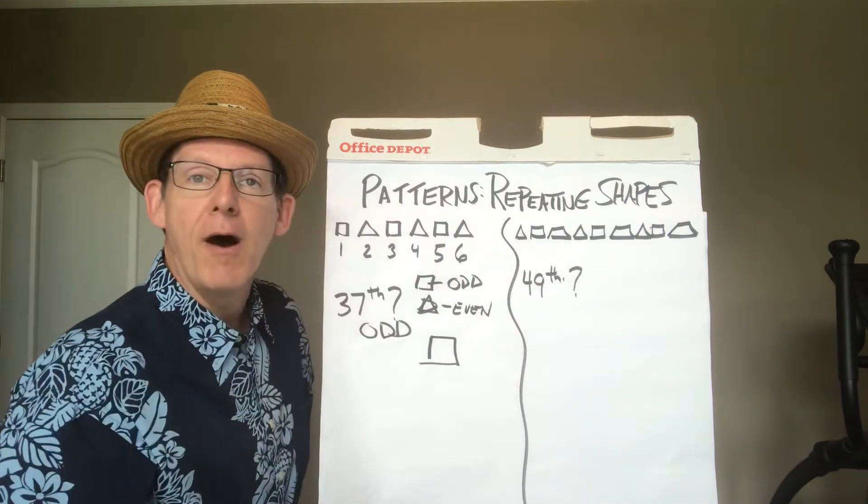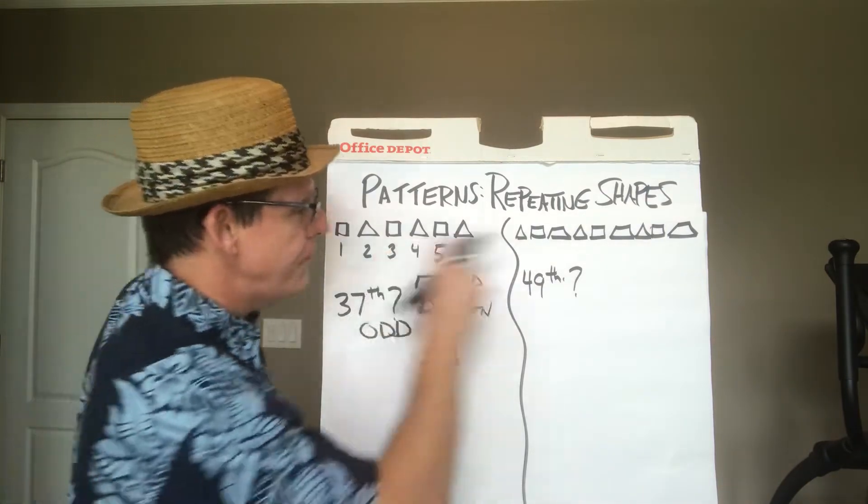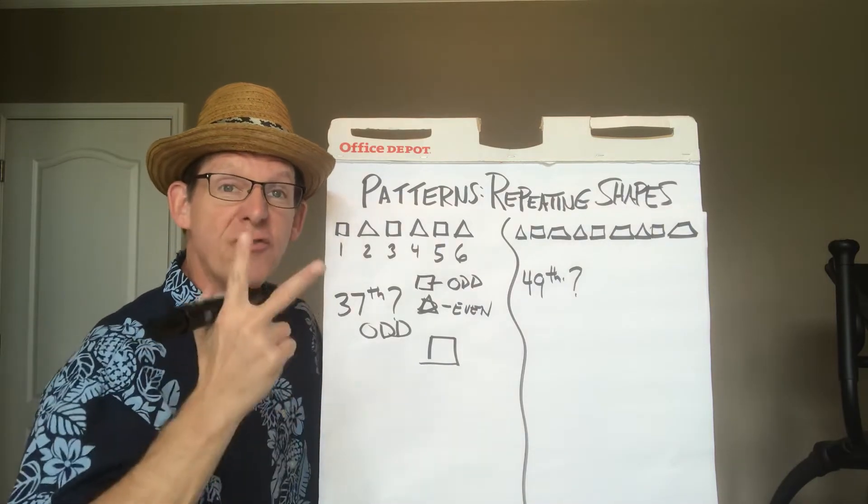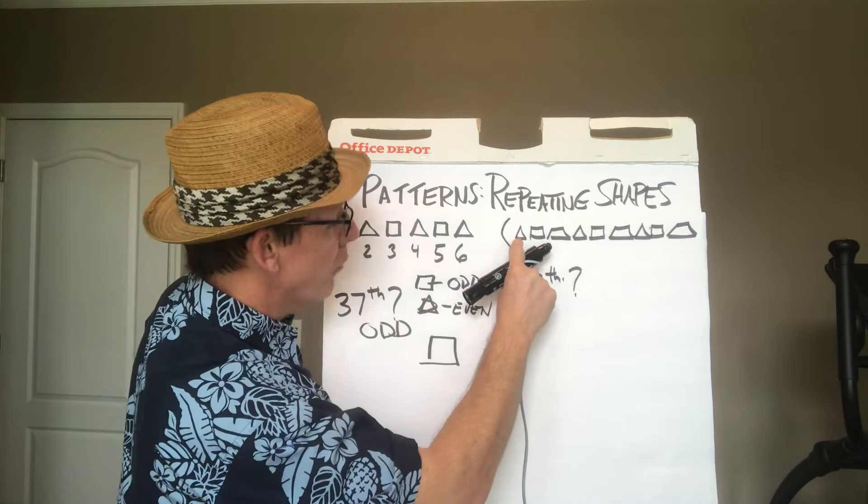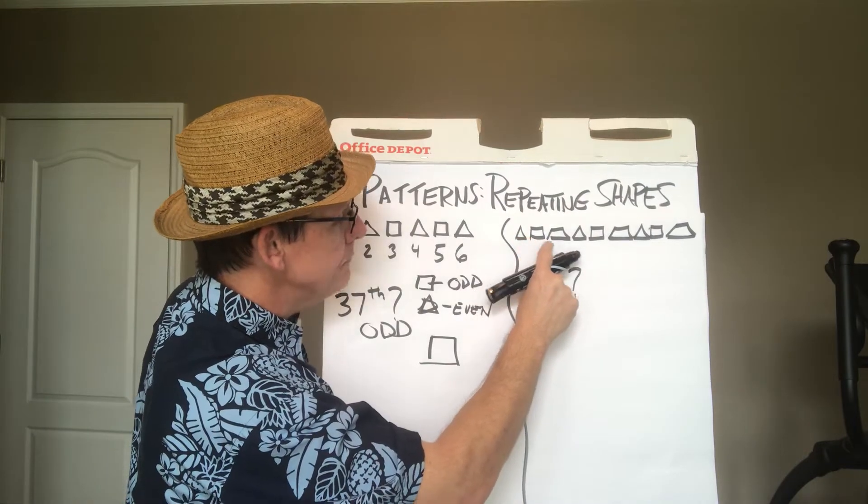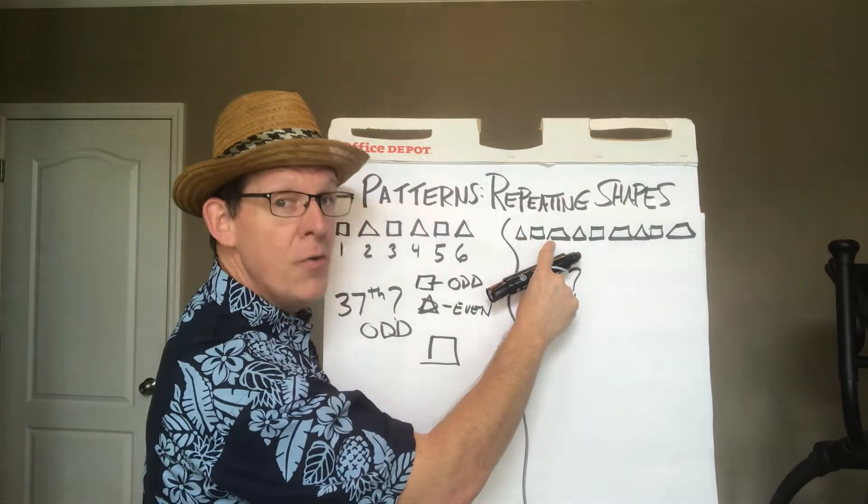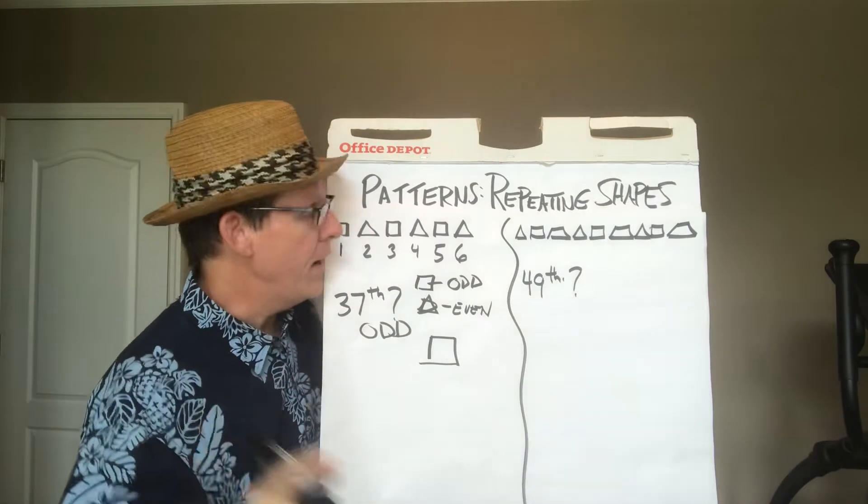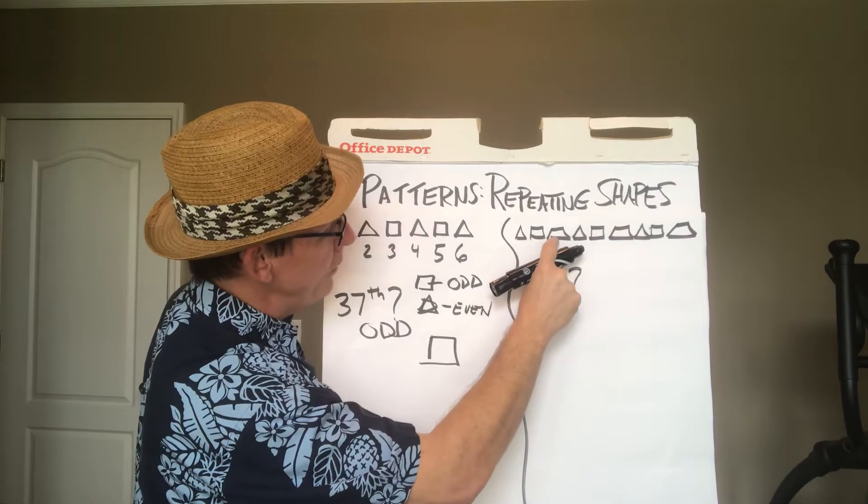Over here we got a harder problem though. It's a little bit trickier. It's a repeating shape problem. This time, the repeating pattern is 3. It is triangle, square, and what's that shape? Oh yeah. It's called, yeah, a trapezoid. Triangle, square, trapezoid.